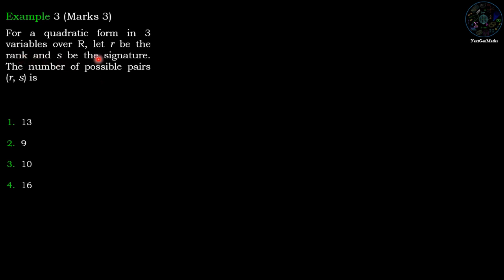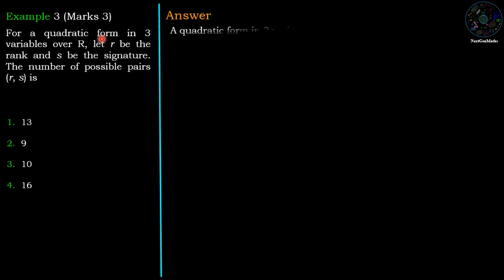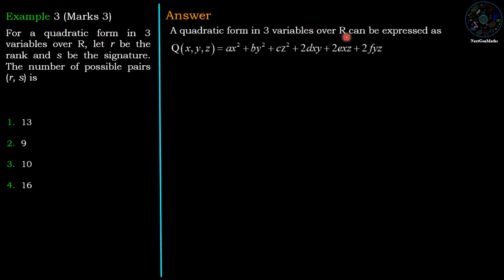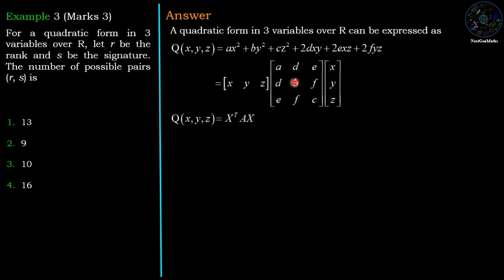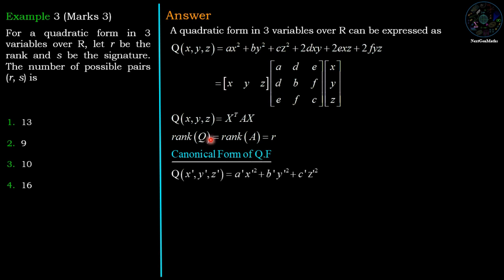This is a problem of rank and signature of a quadratic form in 3 variables. A quadratic form in 3 variables over R can be expressed as ax² + by² + cz² + 2dxy + 2exz + 2fyz, where a, b, c, d, e, f are real numbers. In matrix form, Q(x,y,z) = xᵀAx. The rank of the quadratic form equals the rank of matrix A, which is R. The canonical form is obtained by expressing this as a'x'² + b'y'² + c'z'², eliminating mixed terms xy, xz, and yz.